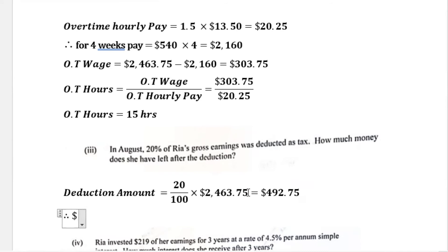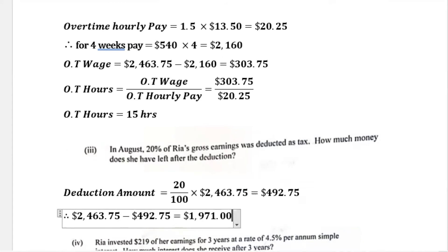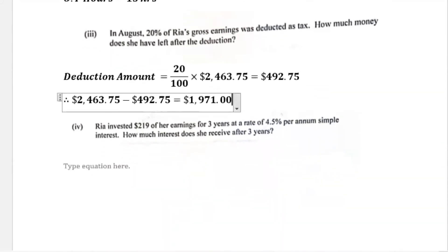Therefore the amount Ria has left is $2,463.75 minus the deduction of $492.75, which gives $1,971. Another way to look at this: if 20 percent was deducted, Ria kept 80 percent. So you could simply calculate $2,463.75 multiplied by 80 percent and you would still get $1,971. That one-step approach also works.